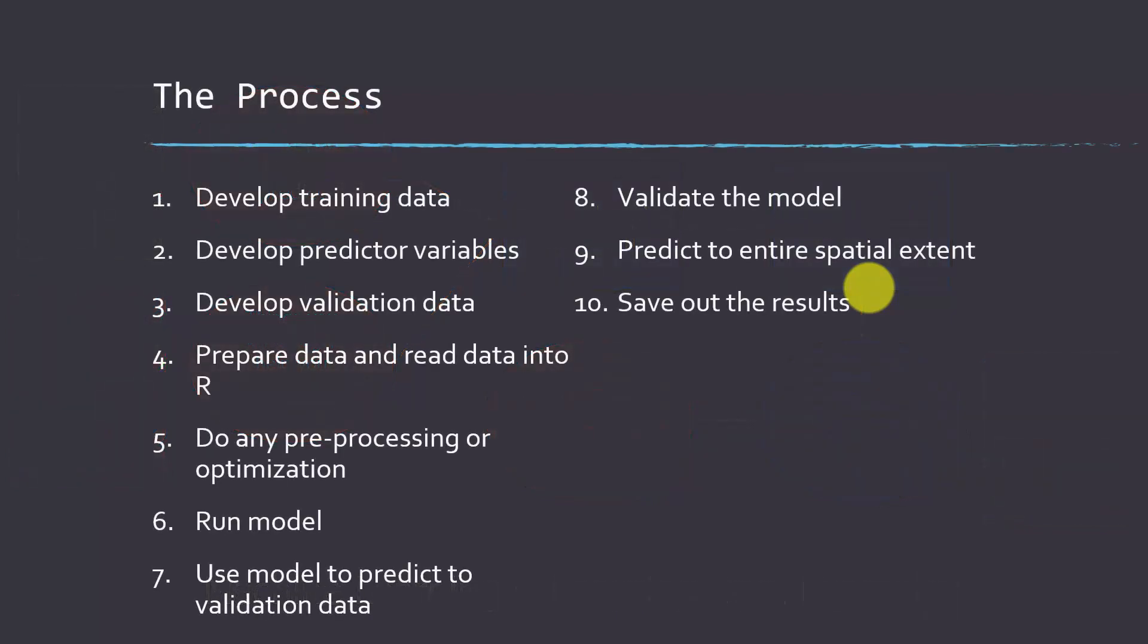Okay, so here's kind of an overview of the process I tend to go through if I'm working on a spatial predictive model in particular. So you need to have training data. So it could be points or polygons or pixels, but you have to have some examples of the thing that you're trying to predict, because, again, this is a supervised process. Then you have to develop some predictor variables, and what you'll use as predictor variables will depend on what it is you're actually trying to predict and the type of output that you want.